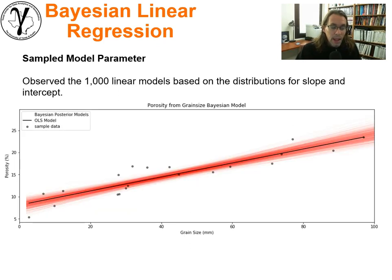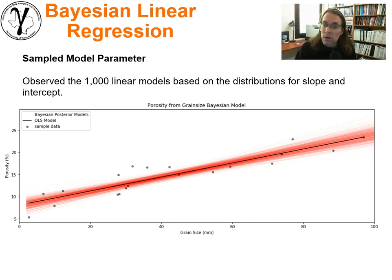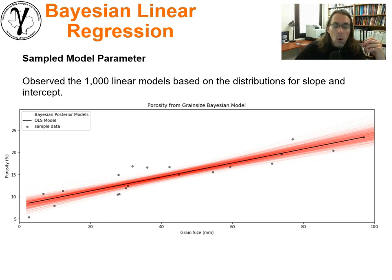We can also sample from the posterior distribution, building up distributions for the intercept, the slope term, and also the homoscedastic variance. When we sample the posterior, we get sets of models — each sample gives us an intercept, a slope, and a variance term. Plotting 1,000 samples of the posterior gives us all of these models, and we compare them to the ordinary least squares solution, the frequentist approach, shown as this line right here.